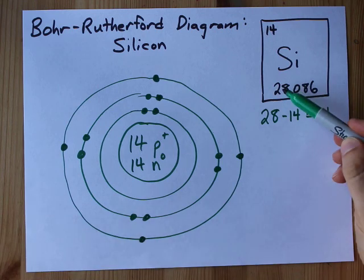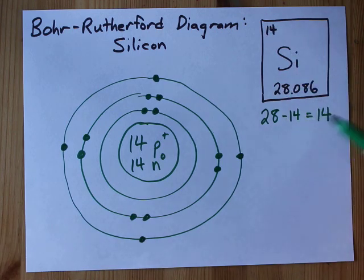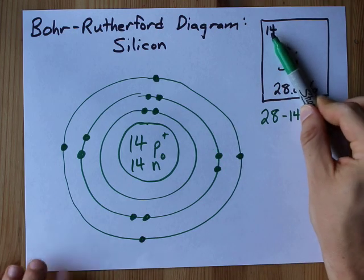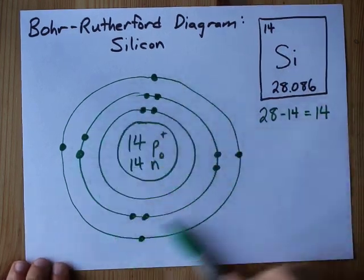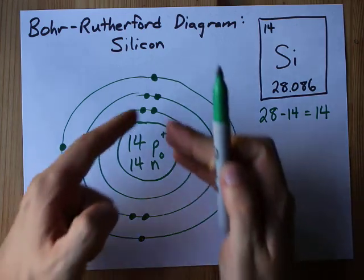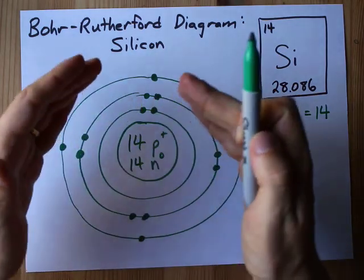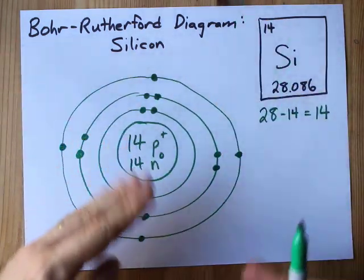14 protons. 28 minus 14 is another 14 neutrons. And because of the 14 protons, I need 14 electrons total in my shells. Two in the first, eight in the next, and only four in the third shell.